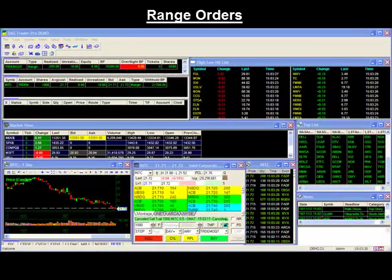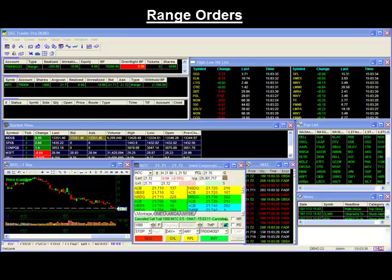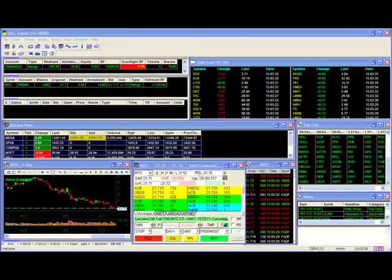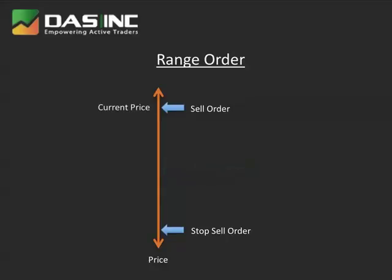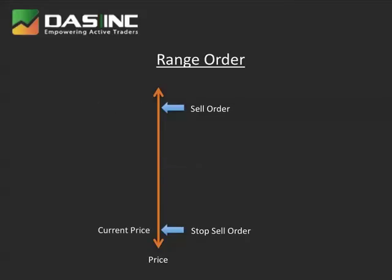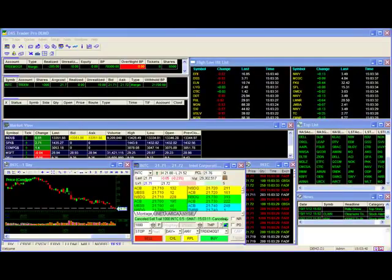The range order is a great feature that allows you to set both a stop and target price simultaneously. If either of those prices is triggered, the other is immediately cancelled. For a long position, you have your sell or target order above the current market and a stop below — both are sell orders. Should the market go up to the target price, the stop is immediately cancelled. Conversely, should the market go down to the stop price, the target order is immediately cancelled. This is also referred to as a one-cancels-the-other order or a bracket order, and it's a great tool for automating your trading strategies.